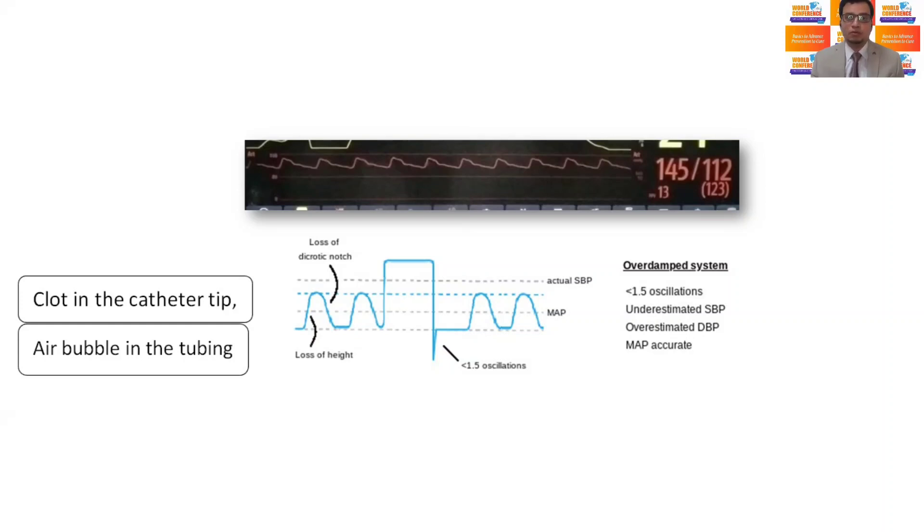In both of the above-mentioned damping situations, the mean arterial pressure will not change. So always rely on the mean arterial pressure.